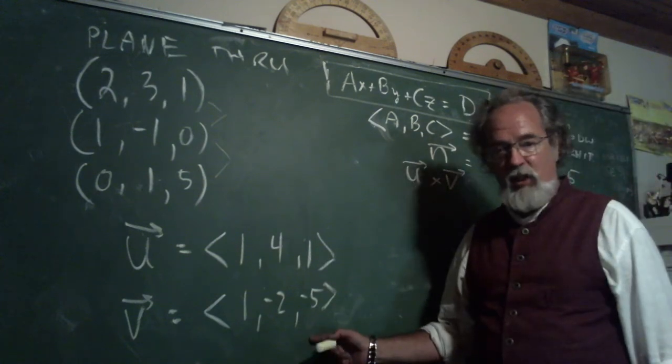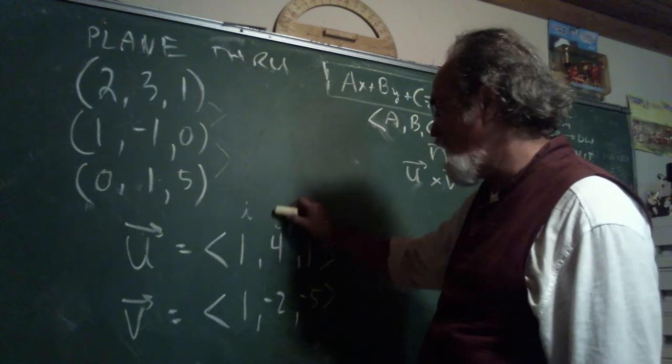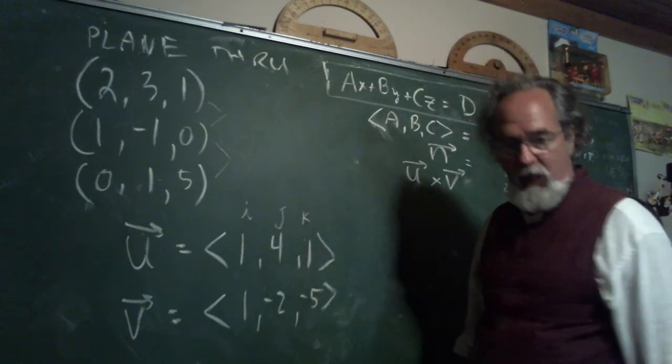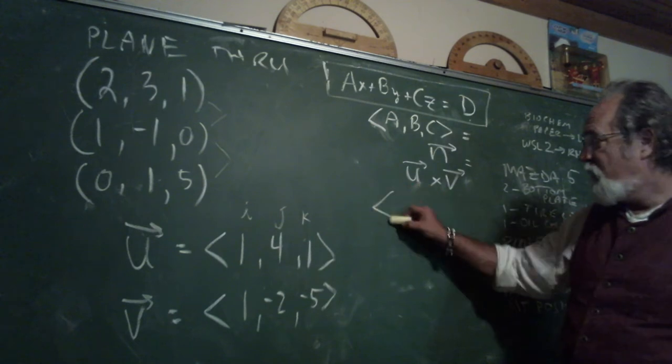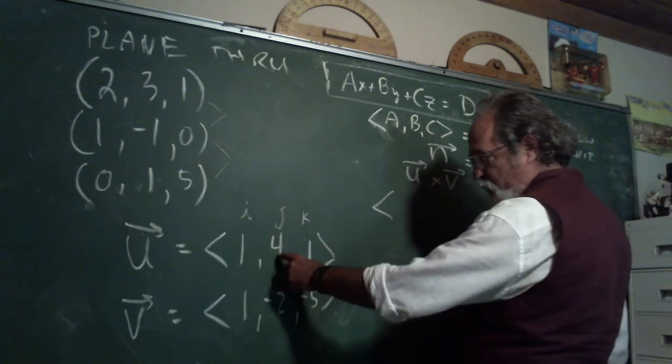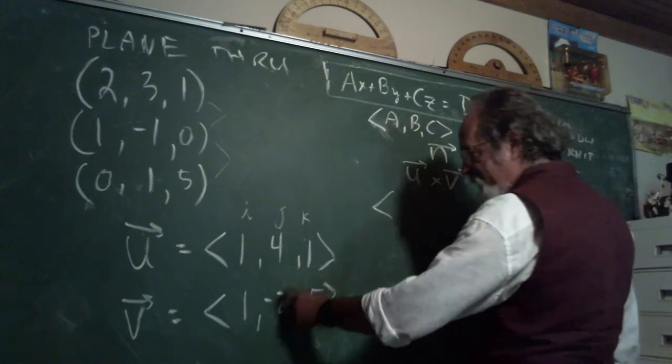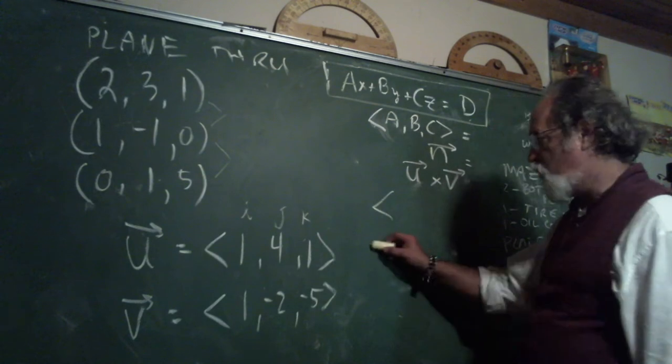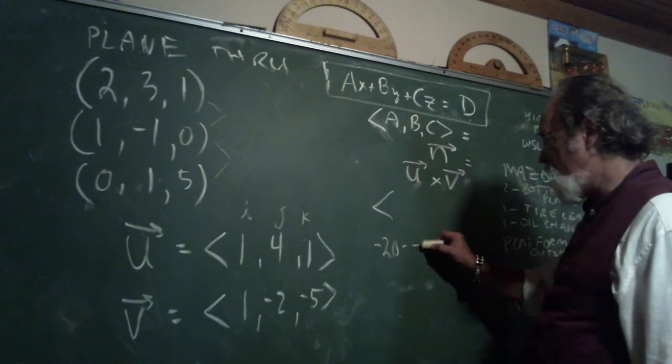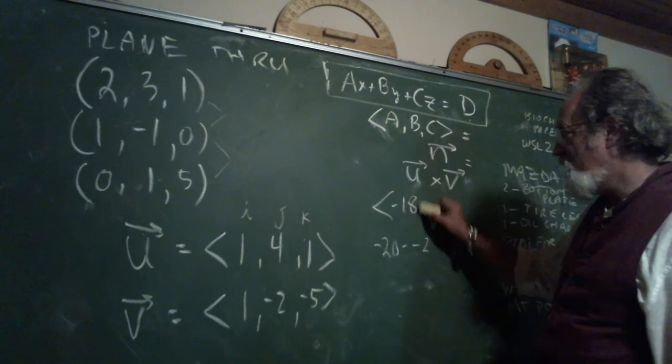I love writing them just like this. U and V write them just like this because just write the I, the J, the K above them, and you get U cross V vector. And now I ignore this first column, and I do 4 times negative 5. That's negative 20. Take away negative 2. So negative 20, take away negative 2, is negative 20 plus 2. That's negative 18. Next.